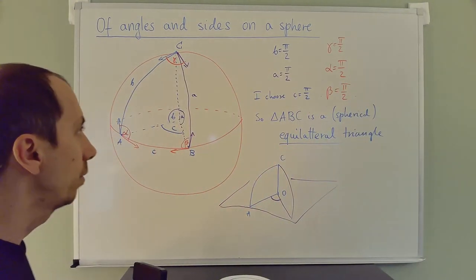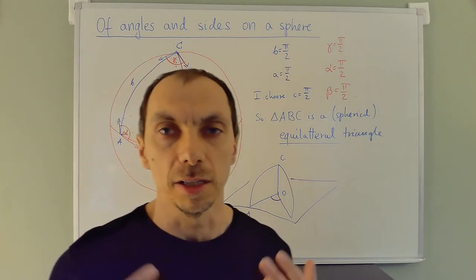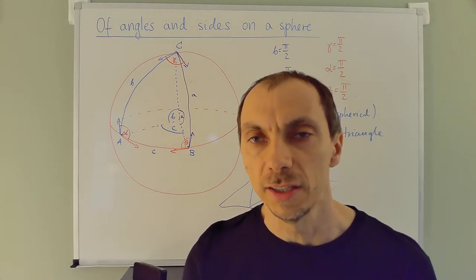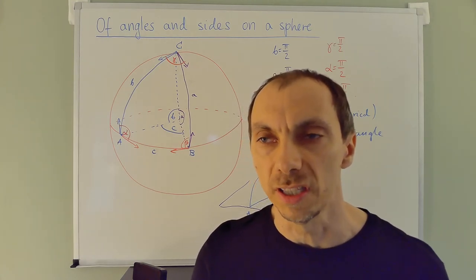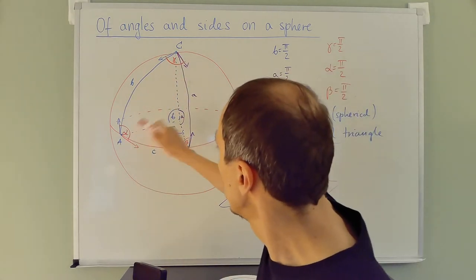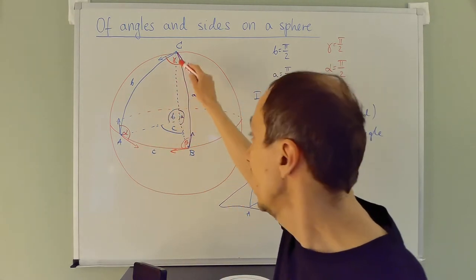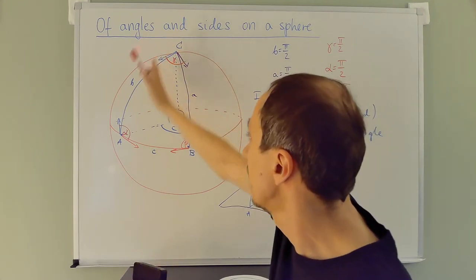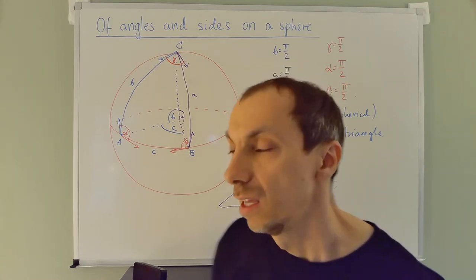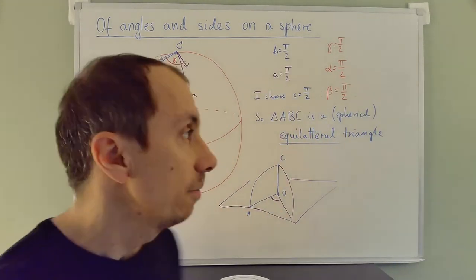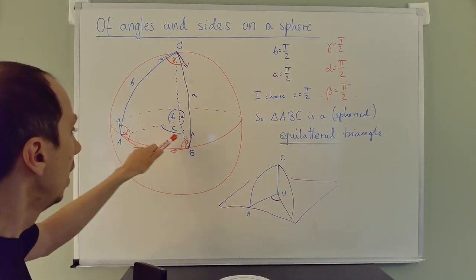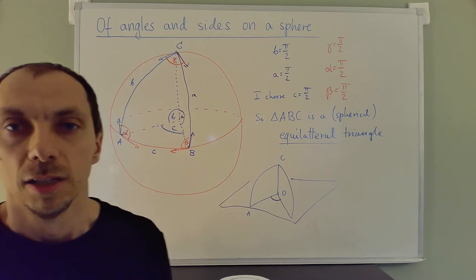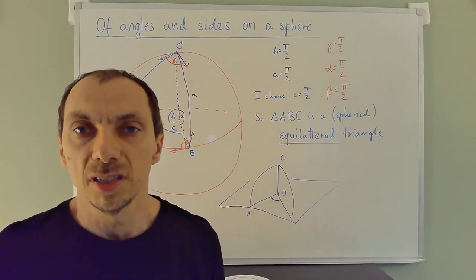Let me step back for a second. I made a big distinction between angles that are lengths of sides (angles at the center of the sphere) and angles that are angles between sides (angles between tangent lines, i.e., between planes). However, here they all happened to be the same. When I computed gamma it came out equal to c. So maybe there's no real distinction — maybe these angles are always the same?